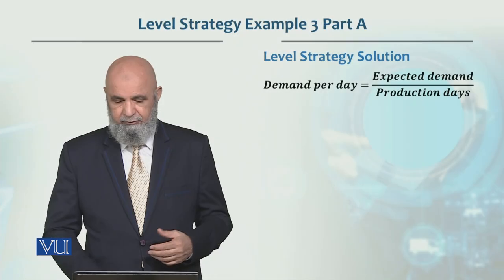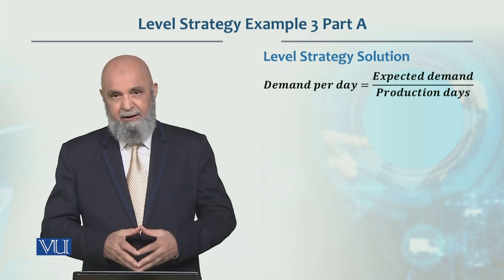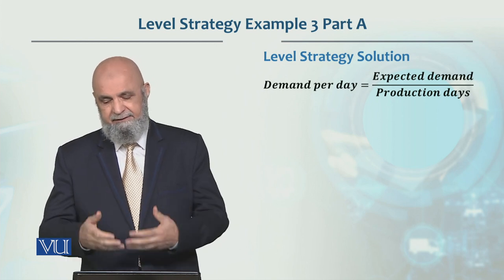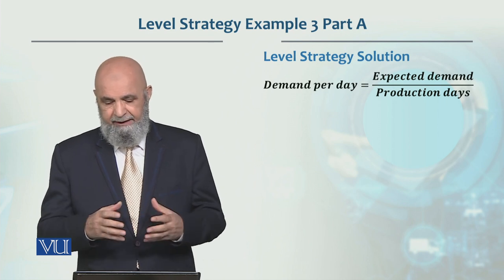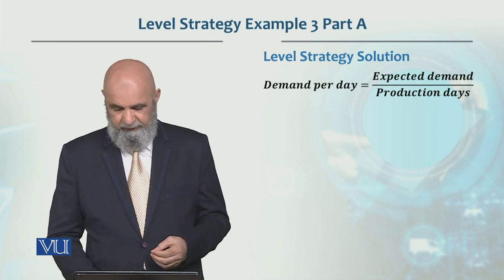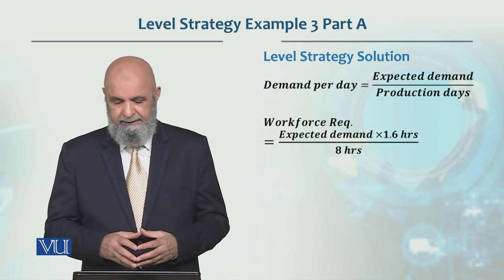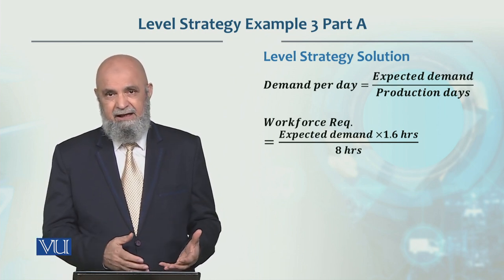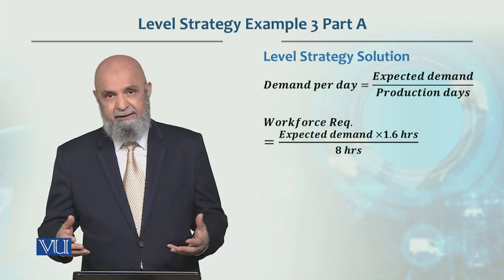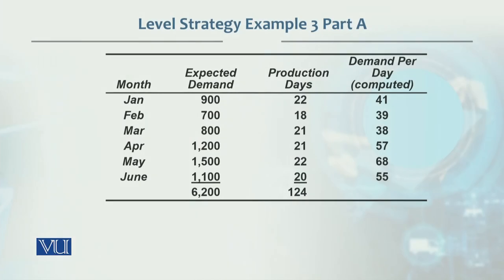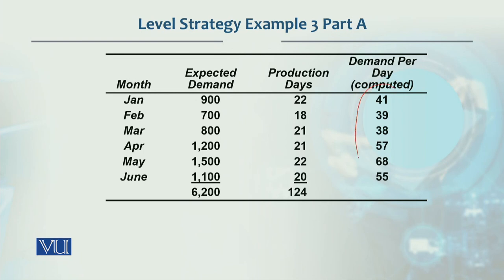The formula used here is the same as in the subcontracting plan. Demand per day is calculated as expected demand divided by the production days available in that month. Workforce requirement is expected demand multiplied by 1.6 hours per unit, divided by 8 hours available per worker. Using this, we calculate demand per day for each month.